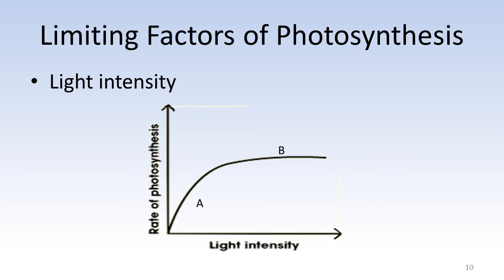However, at point B, it shows that it is the maximum rate that photosynthesis can occur. So even if we were to add more intense light to the plant, the rate will remain at that maximum level.